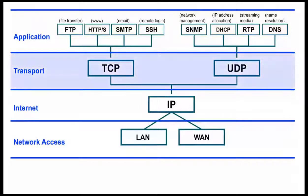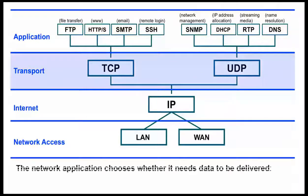The transport layer includes two protocols: TCP, Transmission Control Protocol, and UDP, User Datagram Protocol. These protocols determine how the data will be delivered — reliably or unreliably — and it is up to the network application to choose.